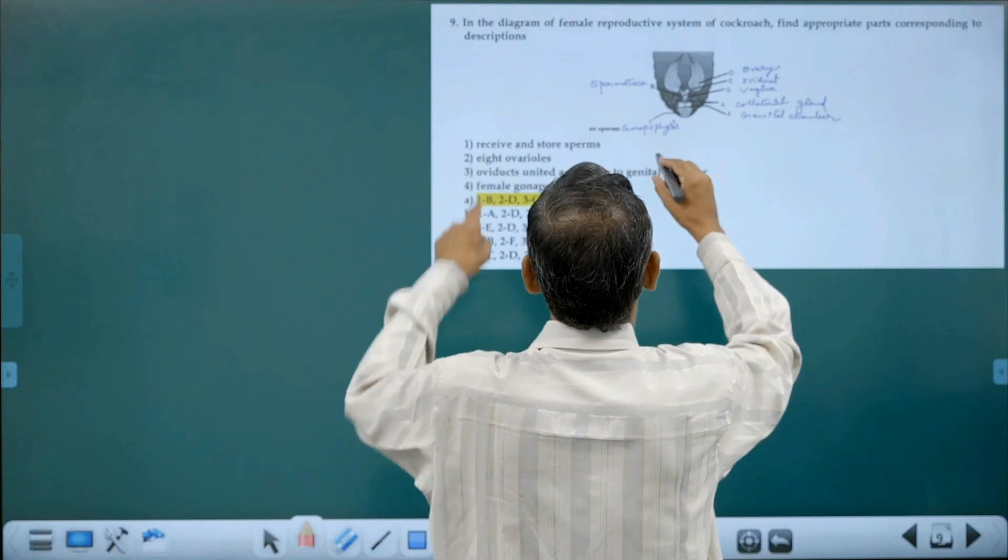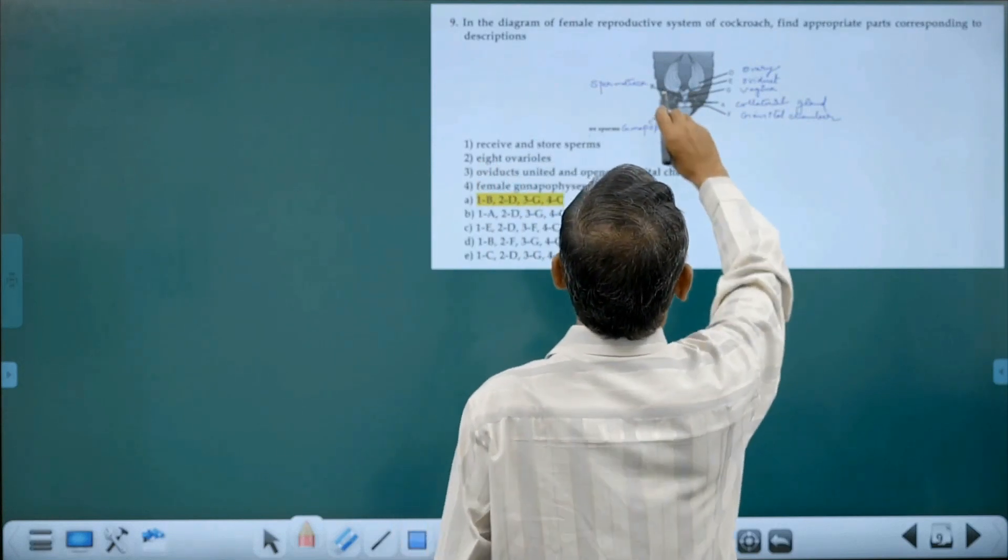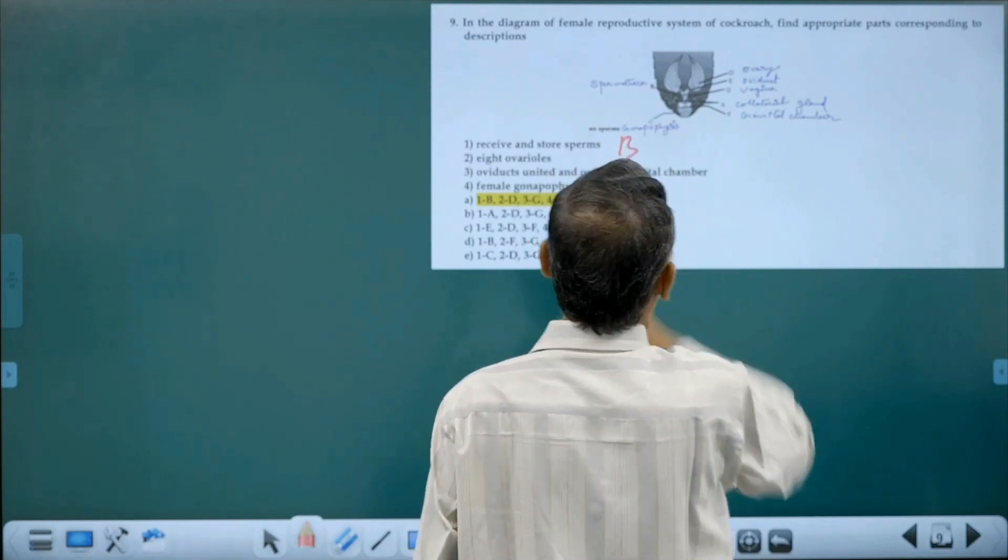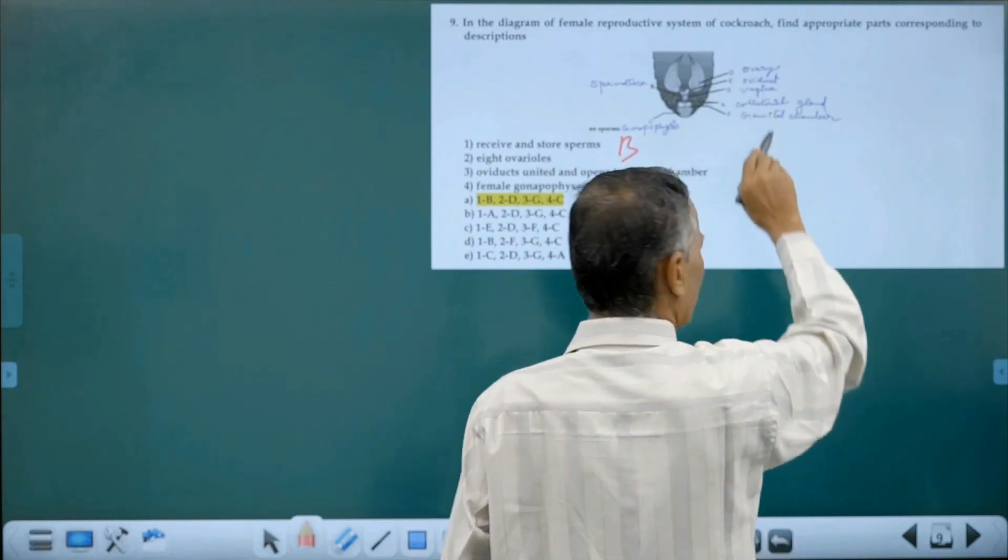So that will be the spermatheca. Spermatheca is marked here as B.